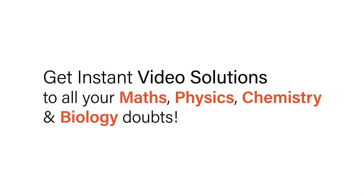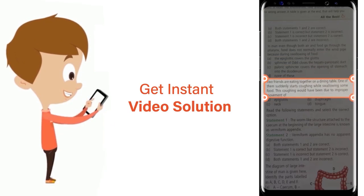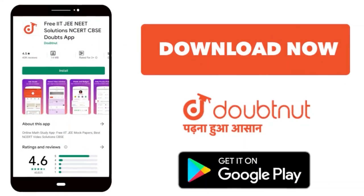With Doubtnet, get instant video solutions to all your maths, physics, chemistry and biology doubts. Just click the image of the question, crop the question, and get instant video solution. Download Doubtnet app today. Hi students, in this question we have to check the divisibility of 15287 by 3.